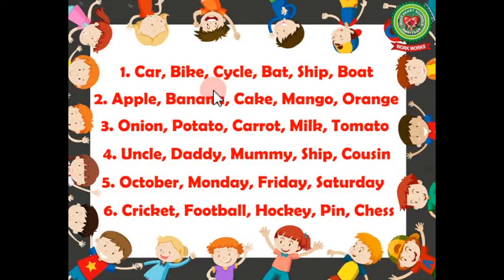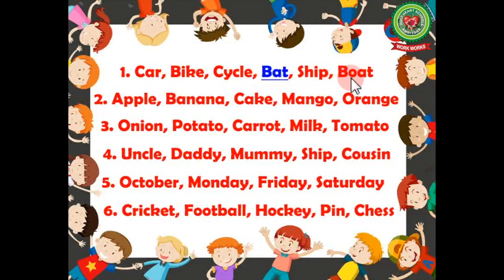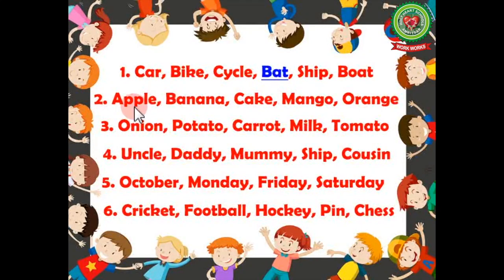Number one: car, bike, cycle, bat, ship, boat. Underline the naming word that is odd. The answer is 'bat', as car, bike, cycle, ship, and boat are all names of vehicles. Since 'bat' is not a vehicle, it is odd here. We will underline 'bat'.